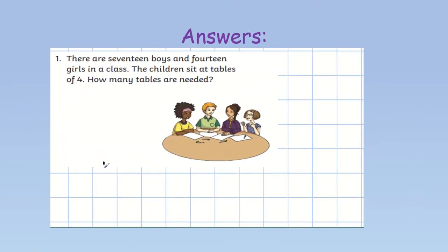So, for question 1, we are told we have 17 boys and 14 girls. So, the first thing we need to do is work out how many children are in the class all together. That means we are going to add together the boys and girls. So, 7 add 4 gives us 11. 10 add 10 makes 20. Add the one we carried gives us 30. So, now we know there are 31 children in the class.